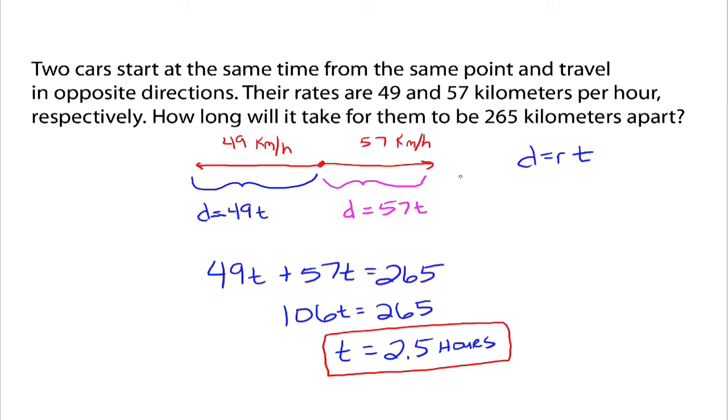Alright? Sometimes it helps to draw a picture, so you can kind of see what's going on, but then it all boils down to distance is equal to rate times time. Now, there are many variations of distance, rate, and time problems. I'm more concerned that you understand the concept. Distance equals rate times time. And then it boils down to just trying to determine which letter it is you're trying to solve for.